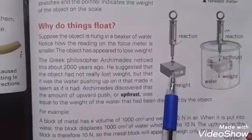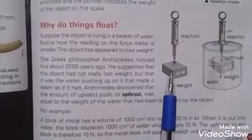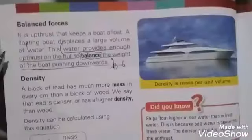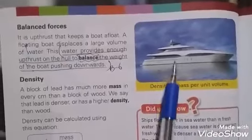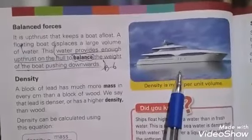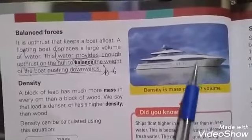It is the upthrust force of the water that reduces the weight and keeps objects in the water. Upward balanced force. It is upthrust that keeps the water afloat. The floating boat displaces a large volume of water. The water provides enough upthrust to the hull to balance the weight of the boat pushing downward.